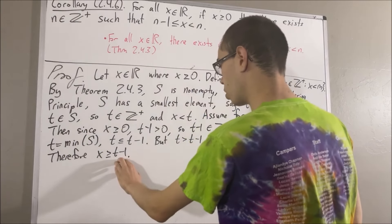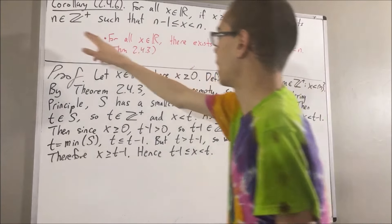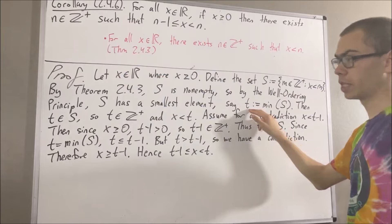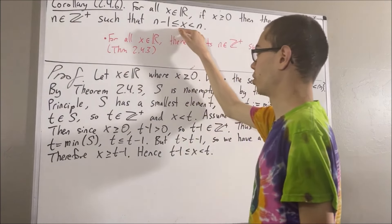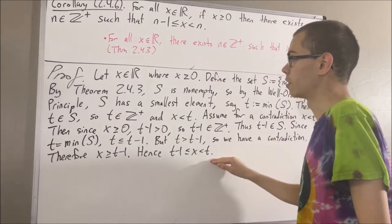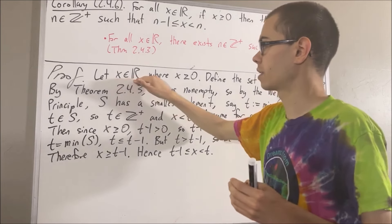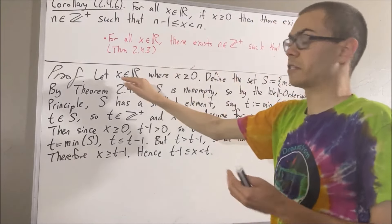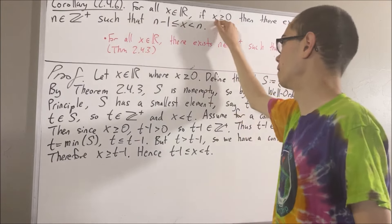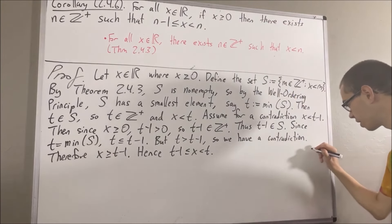So we see that T minus 1 is less than or equal to x, which is less than T. We have shown that the required condition holds, because taking n to be T: T is a positive integer, and T minus 1 is less than or equal to x, which is less than T. Putting this together, we started with an arbitrary real number x and showed that if x is greater than or equal to 0, then there exists a positive integer satisfying the inequality. Since x is arbitrary, this means for all real numbers x, if x is greater than or equal to 0, then the conclusion holds. So we have proven exactly what we wanted to prove, and this completes the proof.